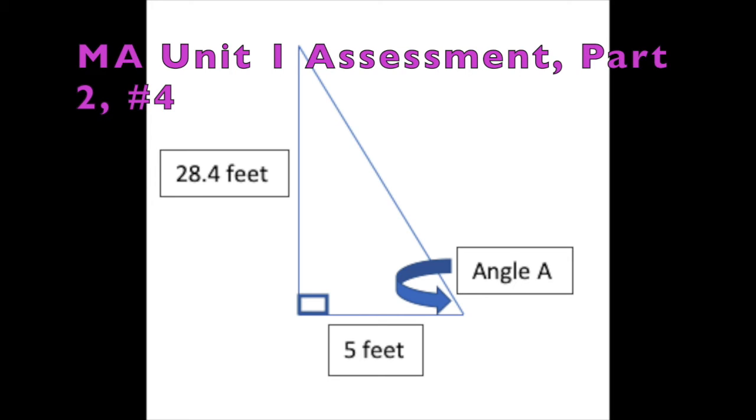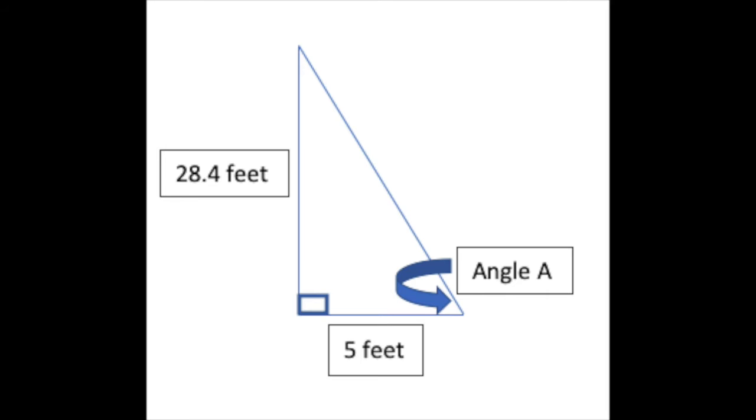Problem number four said a tower 28.4 feet high must be secured with a wire anchored five feet from the base of the tower. And then the question was, explain how you will create an equation to find the angle that the wire will make with the ground.